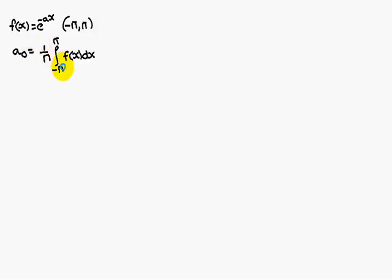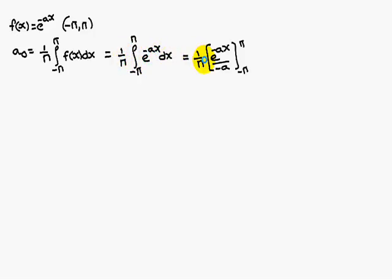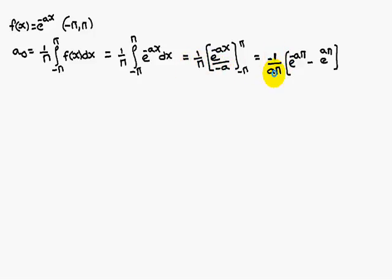a0 is equal to 1 by pi integral minus pi to pi f of x dx. f of x is e power minus ax into dx. That is 1 by pi, integration of e power minus ax is e power minus ax by minus a, between the limits minus pi to pi. That gives us minus 1 by a pi into e power minus a pi minus e power a pi.